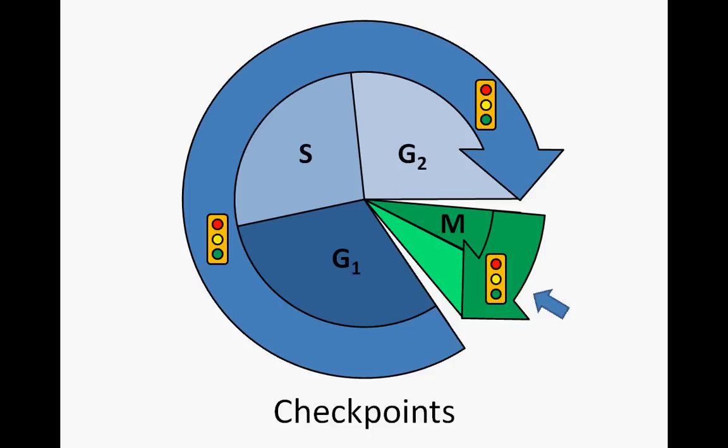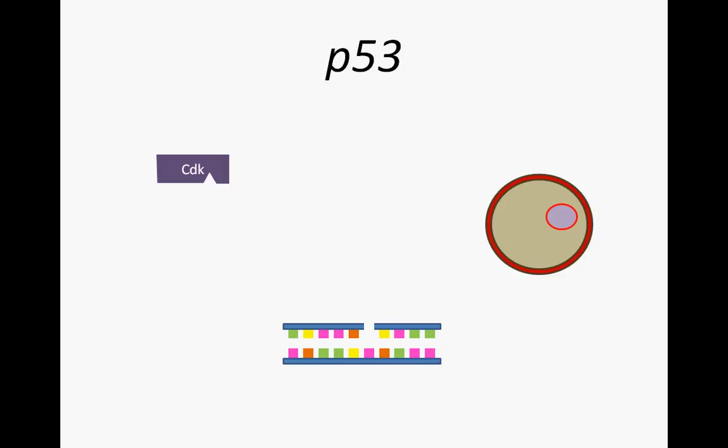The mechanisms underlying these checkpoints rely on a specific set of genes and merit further study. One such gene is P53. As a cell senses DNA damage, P53 is activated.